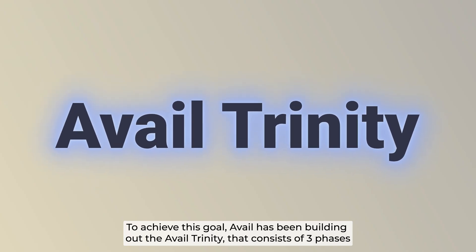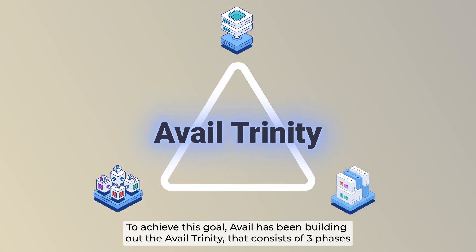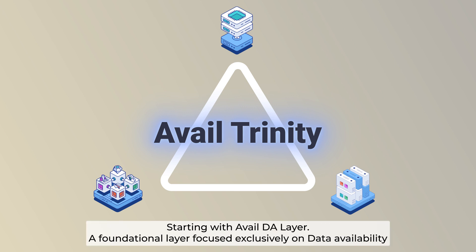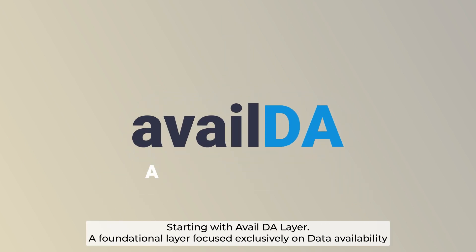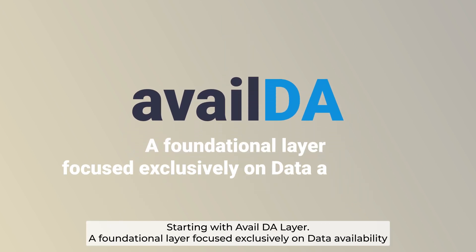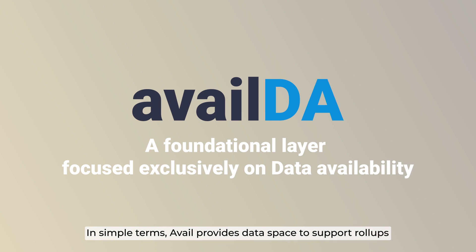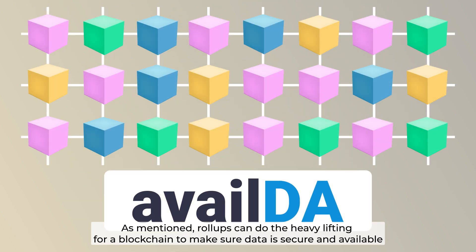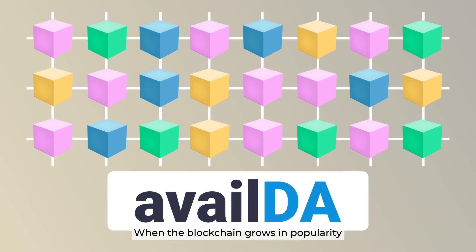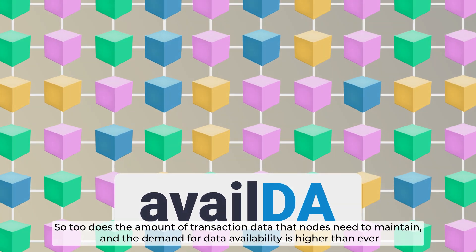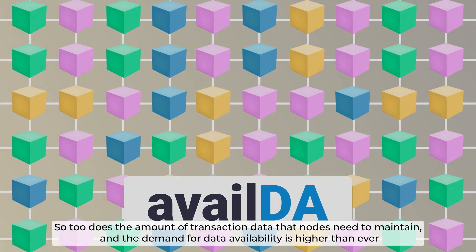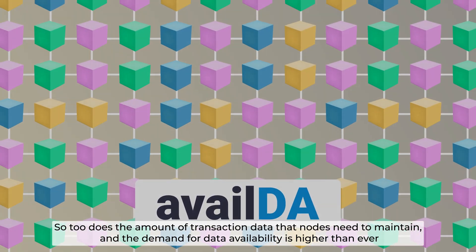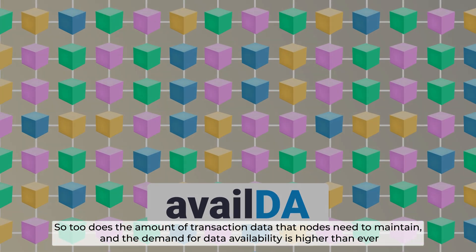To achieve this goal, Avail has been building out the Avail Trinity that consists of three phases, starting with the Avail DA layer — a foundational layer focused exclusively on data availability. In simple terms, Avail provides data space to support roll-ups. Roll-ups can do the heavy lifting for a blockchain to make sure data is secure and available. When the blockchain grows in popularity, so too does the amount of transaction data that nodes need to maintain, and the demand for data availability is higher than ever.